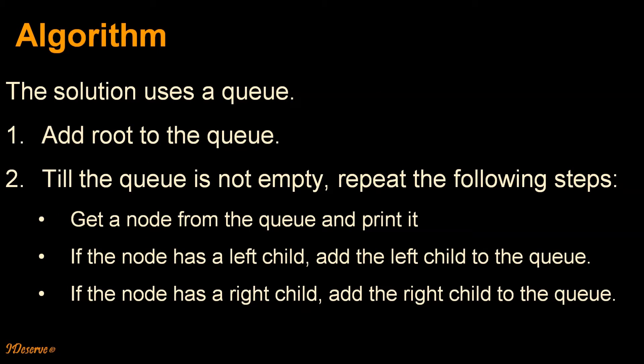The algorithm for this problem is the solution uses a queue. We first add root to the queue. Second step is till the queue is not empty we repeat the following steps. We get a node from the queue and print it. If the node has left child we add the left child to the queue. If the node has right child we add the right child to the queue.